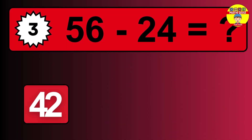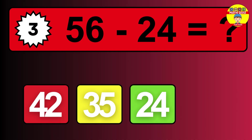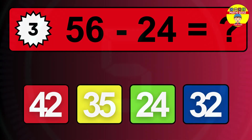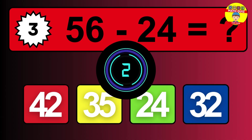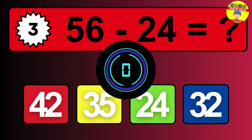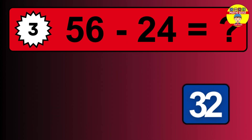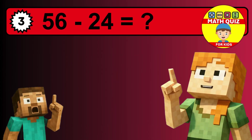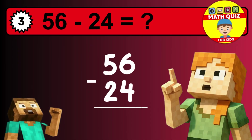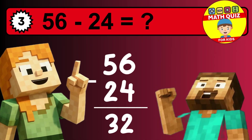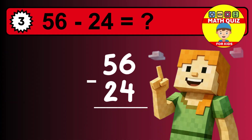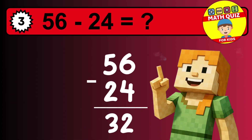What is 56 minus 24? Time to think. Let's solve this step by step. We start with the units: 6 minus 4 is 2. Then we go to the tens: 5 minus 2 is 3. The final answer is 32.